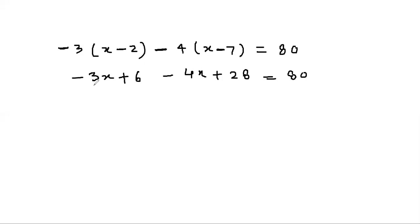Now -3x - 4x will become -7x, and 6 + 28 will become 34.